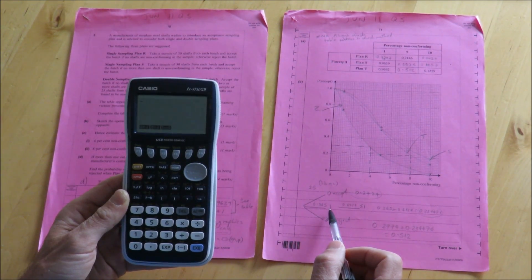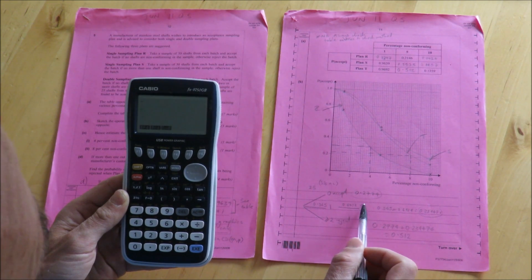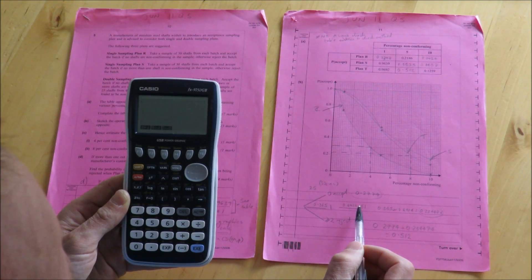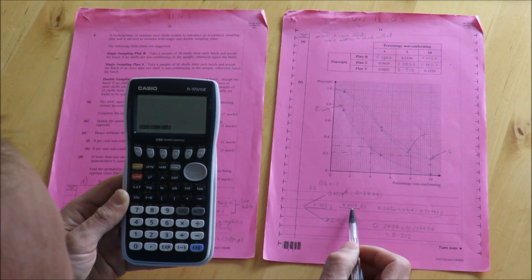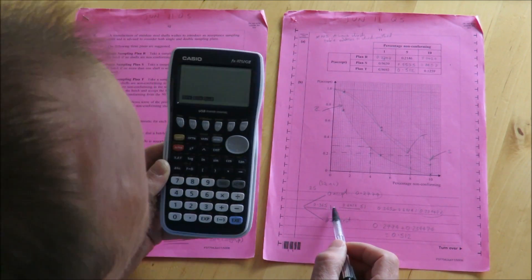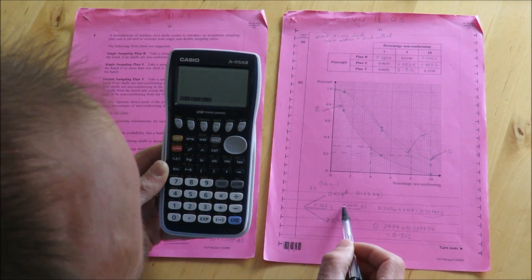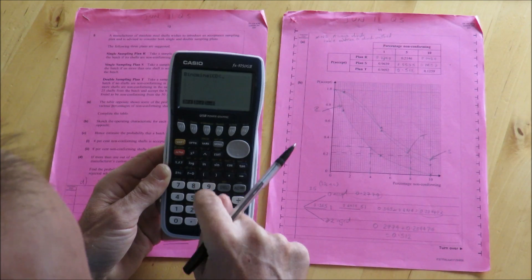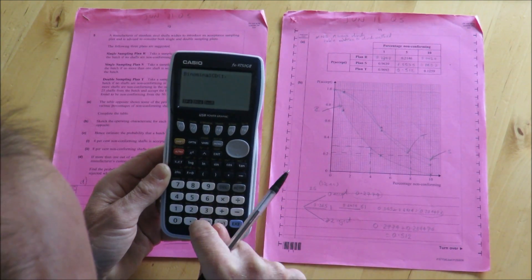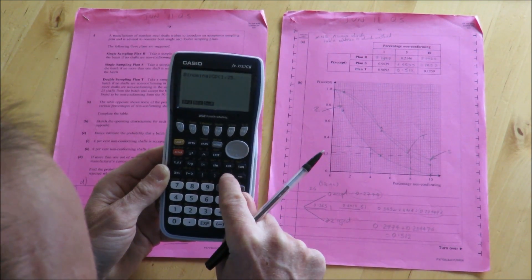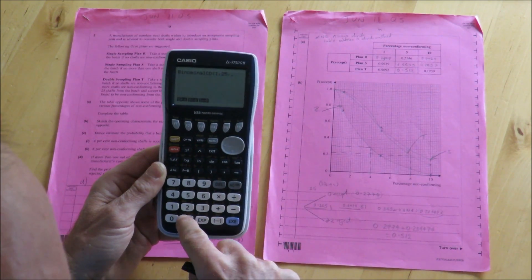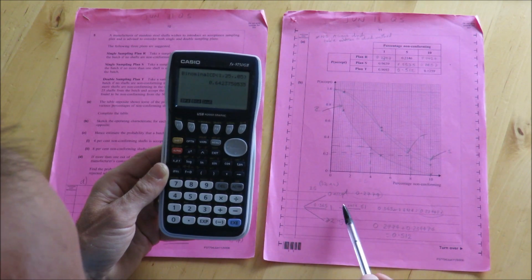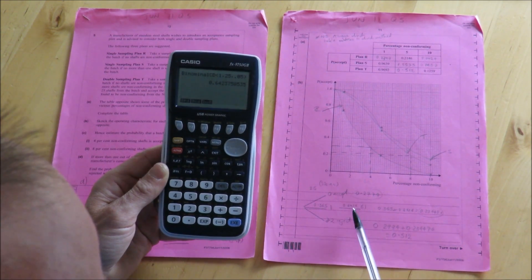Now importantly on the second part of the sample, I'm going to switch from BPD to BCD, because on this one now, overall, if I want 2 or fewer non-conforming items overall, having already encountered 1, then for the second one I can have 1 or fewer. So on this second one, I'm now going to multiply my 0.365 by this value, 0.6424. Now the 0.6424 comes from BCD, 1, 25, and again 0.05 is the value there for the percentage non-conforming.